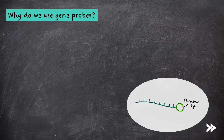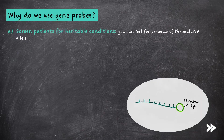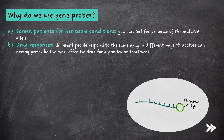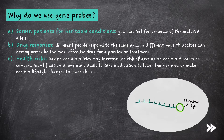So why do we use gene probes? They can be used to screen patients for heritable conditions because you can test for the presence of the mutated allele. You can also use them to investigate drug responses — different people respond to the same drug in different ways, and doctors can hereby prescribe the most effective drug for a particular treatment. Finally, gene probes can also be used to check for health risks, as having certain alleles may increase the risk of developing certain diseases or cancers.